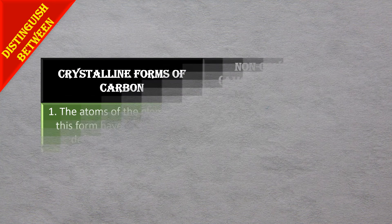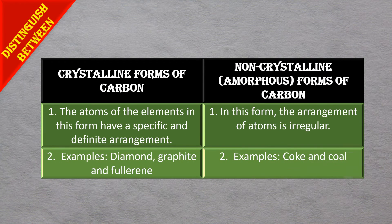A question: distinguish between crystalline forms and non-crystalline or amorphous forms of carbon. In crystalline forms — diamond, graphite, fullerene — the atoms have a specific and definite arrangement. You can learn more about the crystalline forms in the previous video. In amorphous forms — coal, coke, charcoal — the arrangement of atoms is irregular, placed randomly.